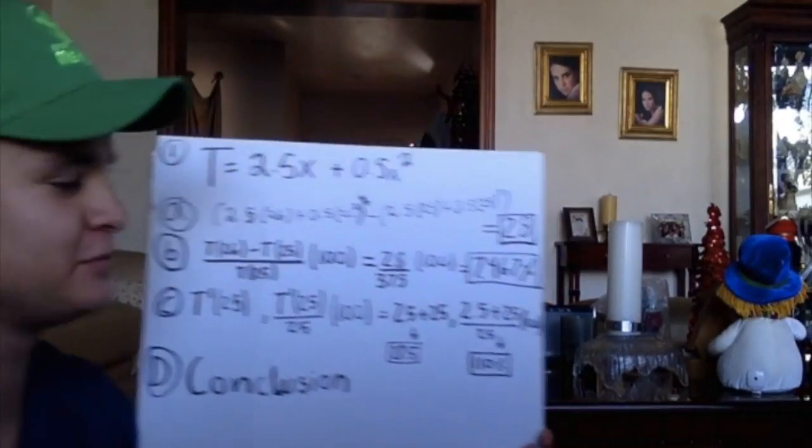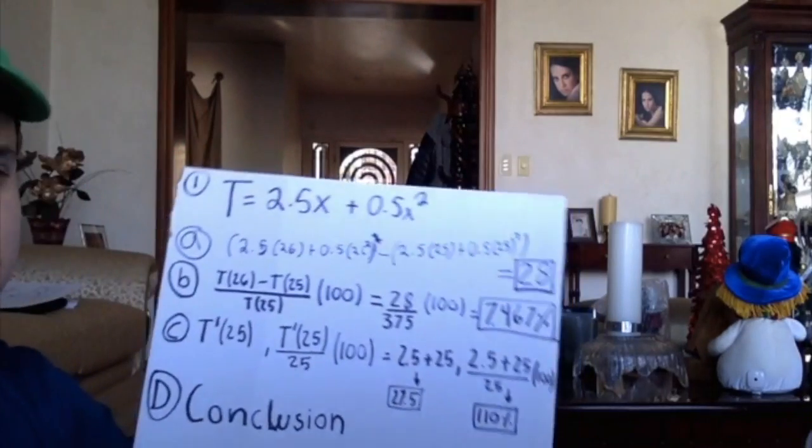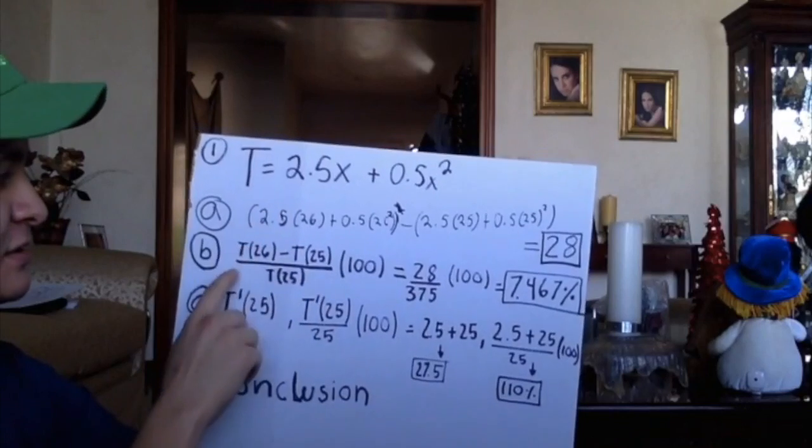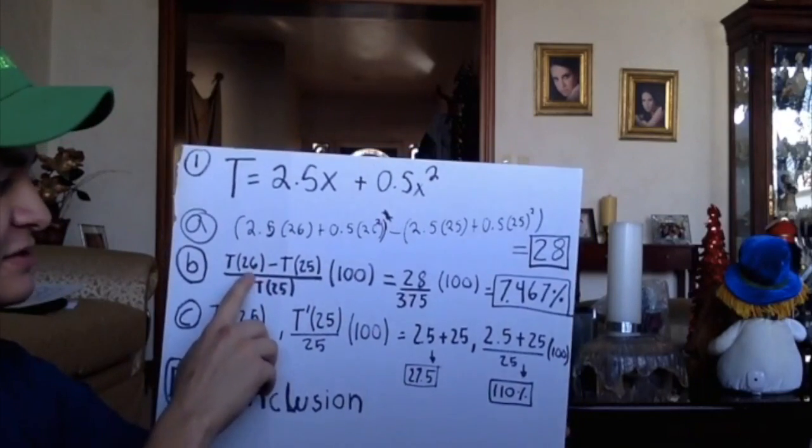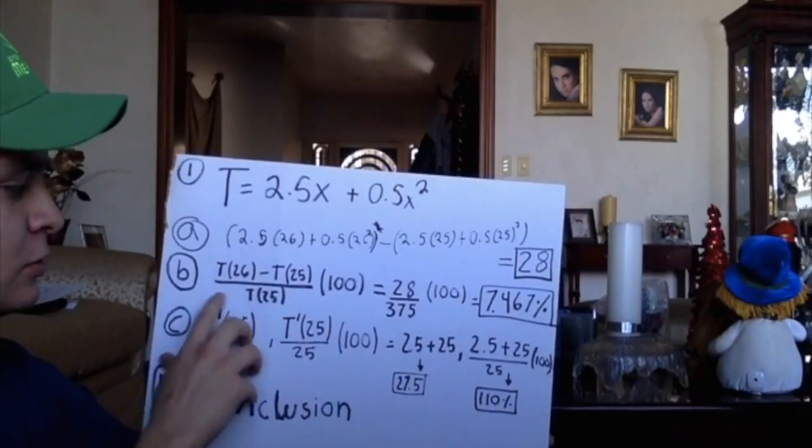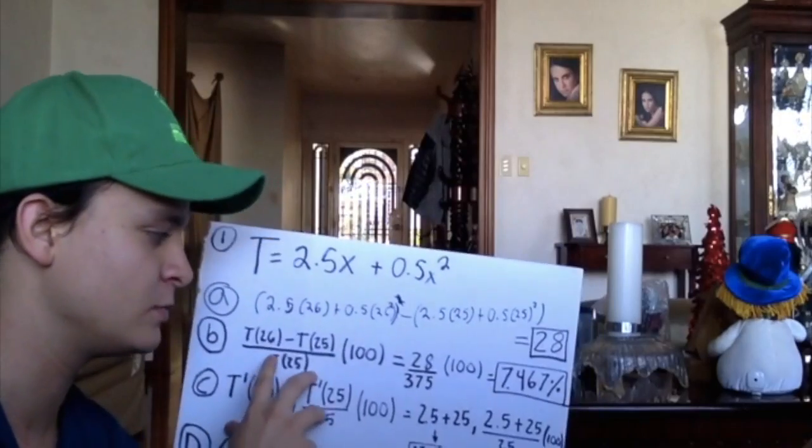So in number b, we need to find the percentage of the change. So what we did was the formula, that is t with 26 as a value minus t with 25 as a value, and that over the formula with 25 as a value.